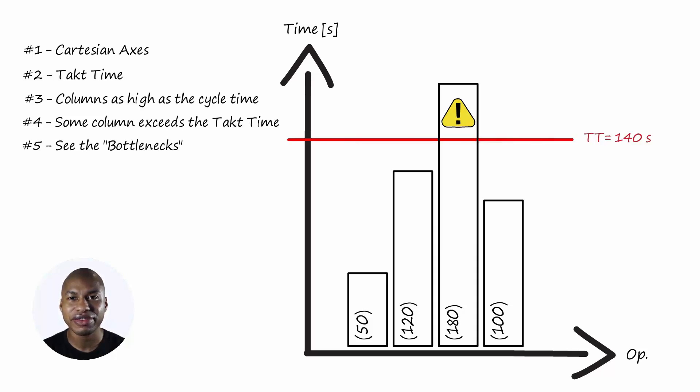Step 5: All the columns that exceed the takt time are the bottlenecks of the production line. Step 6: All bottlenecks are immediately subjected to Kaizen events to bring them back below the takt time.